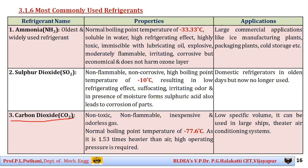The third refrigerant is carbon dioxide (CO2). It is non-toxic, non-flammable, inexpensive, and odorless. Its normal boiling point is −77.6°C. Its density is 1.53 times heavier than air, which means a higher operating pressure is required, and therefore more compressor work is needed. It is used especially in large ships and centralized air conditioning systems.